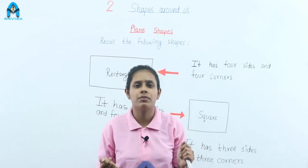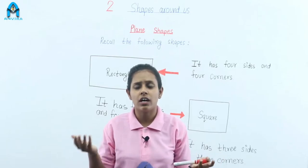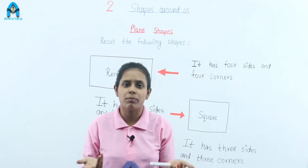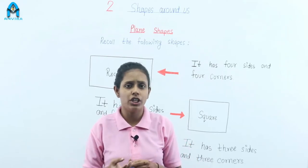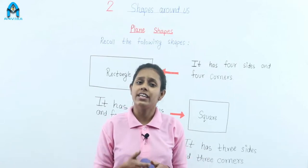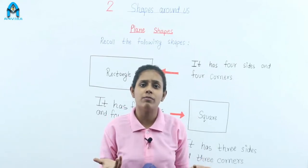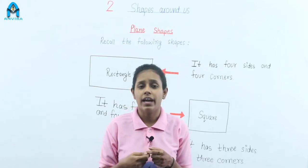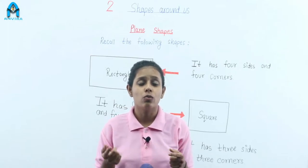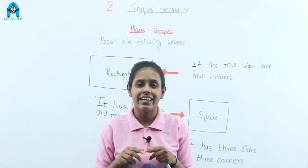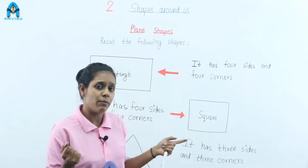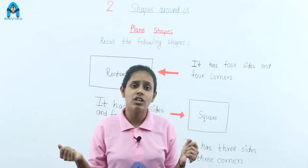Shapes — what is a shape? Any object you see around you — at home, in a room — we have a geometry box, we eat chapati, everything has a shape. The outline of an object is its shape. You eat a chapati — the shape of chapati is round. You use a geometry box at school — the shape of a geometry box is a rectangle. Around us, we have many, many shapes. In this chapter, we will read about many different shapes.